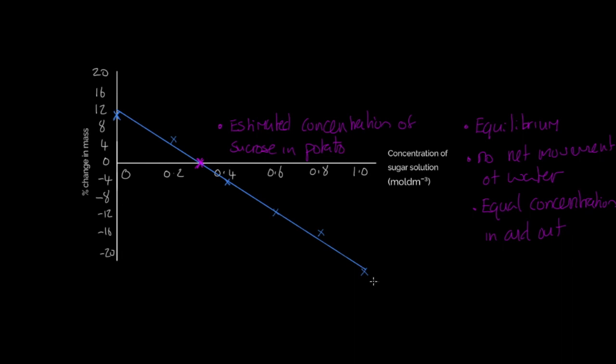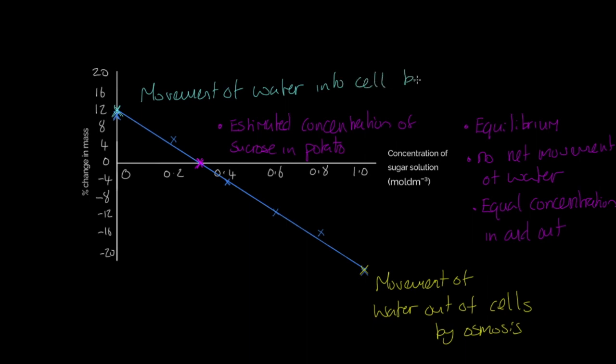Now, final points for me. If we were to take this point here, for example, and really anything in negative figures, we can describe this as movement of water out of cell or out of cells by osmosis. So, that is how we represent or how we can describe the reduction in mass of the potato core because it's movement of water out of those cells by osmosis. And finally, we can do exactly the same perhaps up at this point. What we say here is movement of water into cell by osmosis. And at that point, we can consider ourselves done.